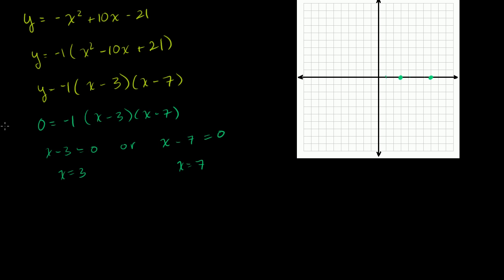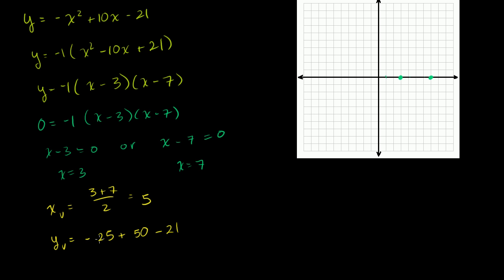We know the vertex is right between the intercepts. The x for the vertex is 3 plus 7 over 2, which equals 10 over 2, which equals 5. For the y-value: y equals negative 5 squared plus 10 times 5 minus 21, which gives negative 25 plus 50 minus 21. That's negative 46 plus 50, so y equals 4. The vertex is at 5, 4 — plotted right there.